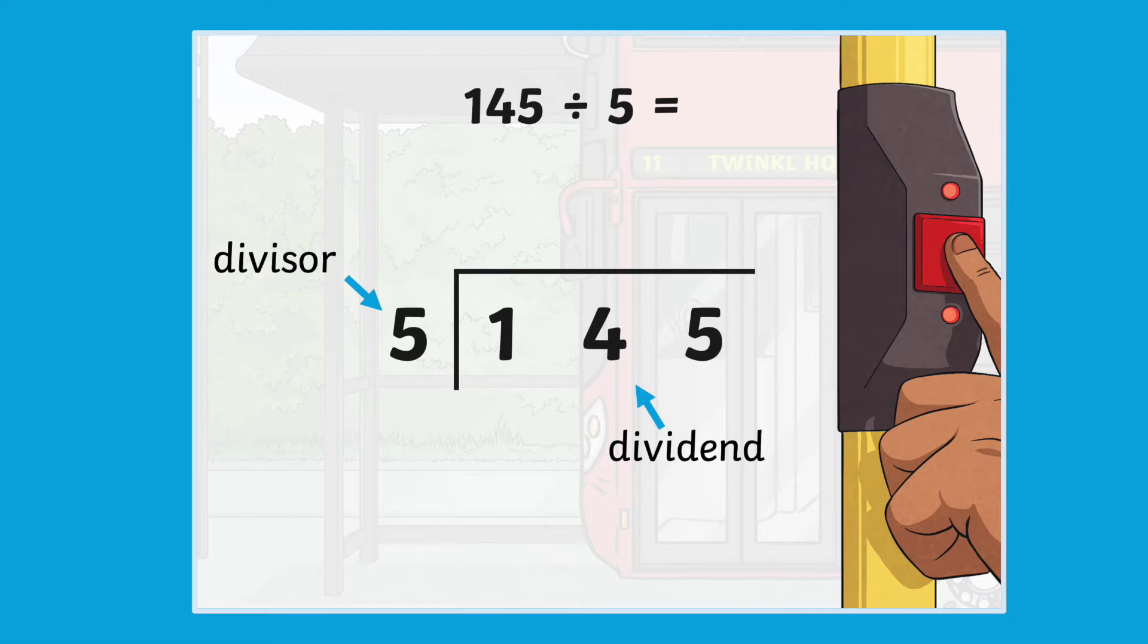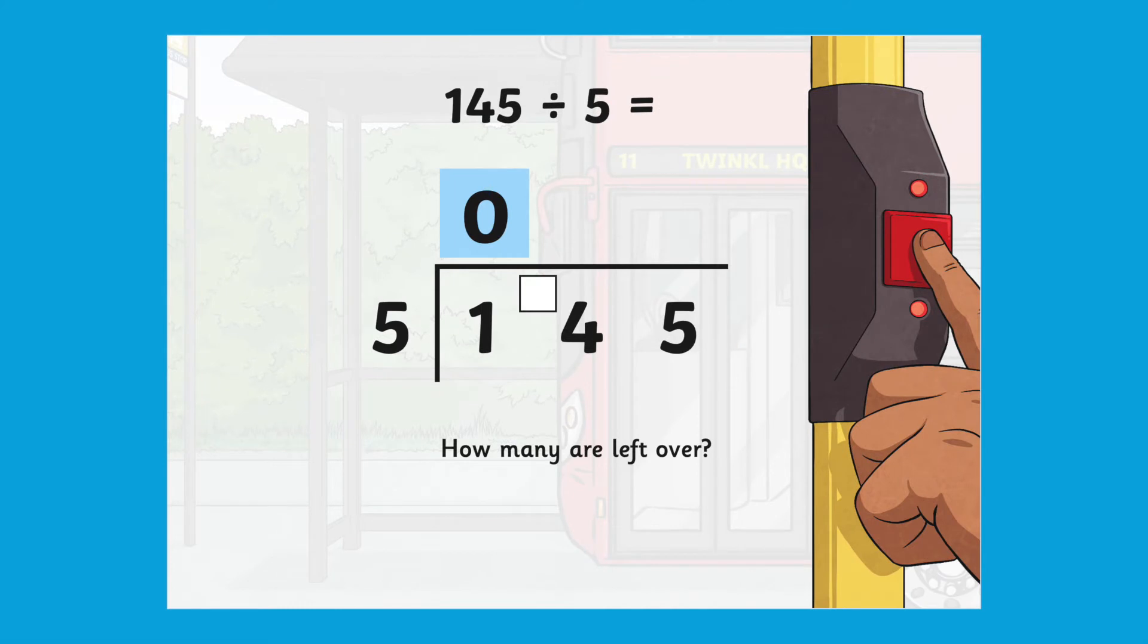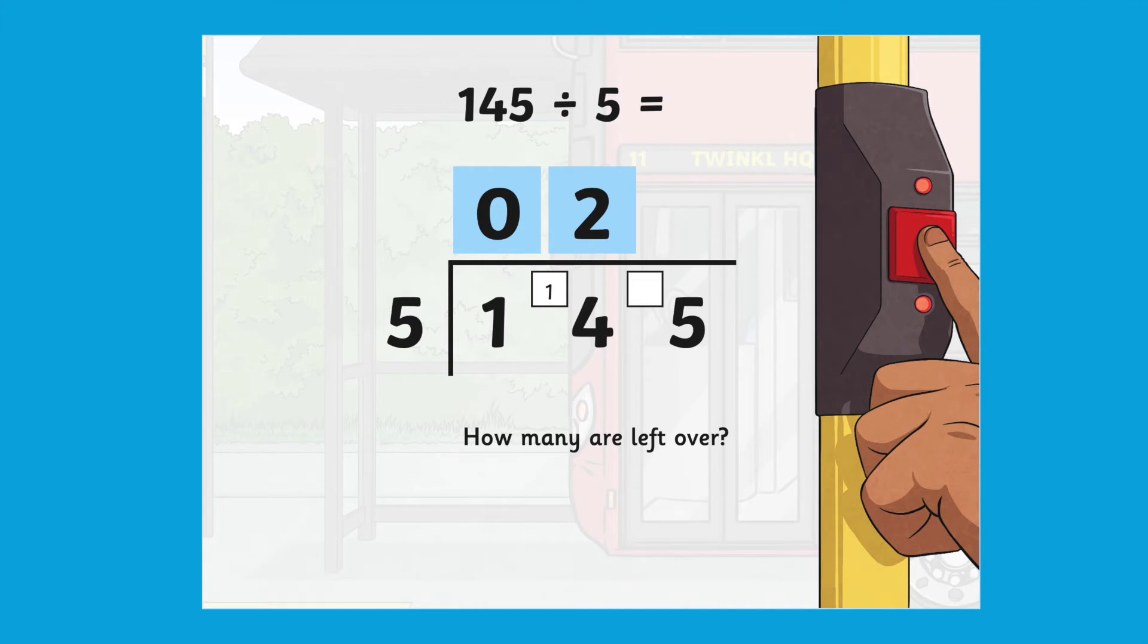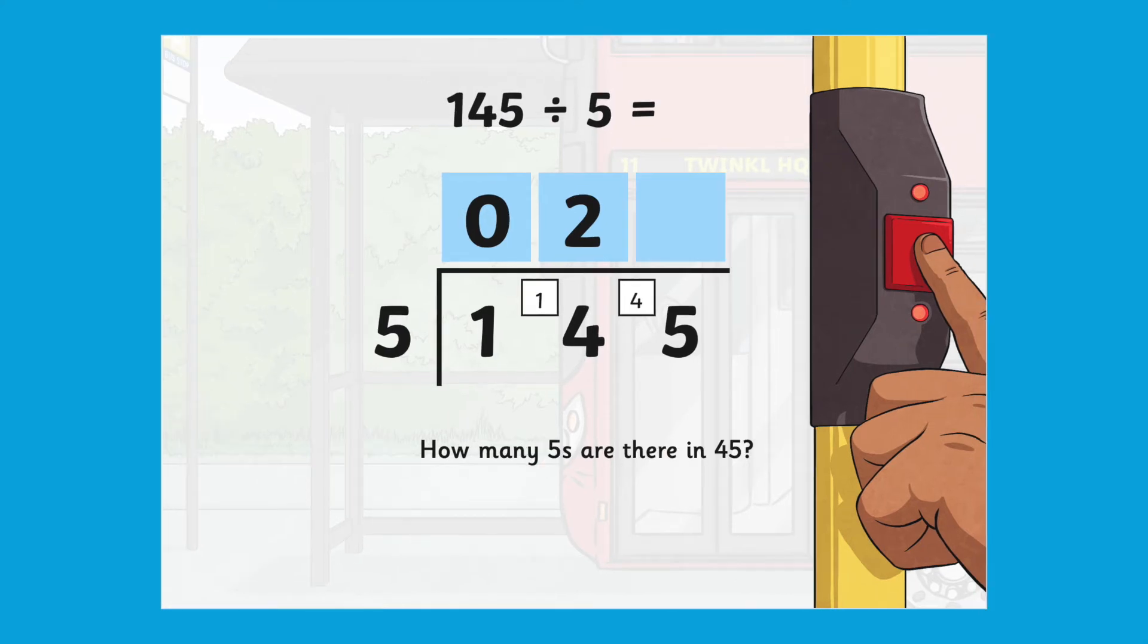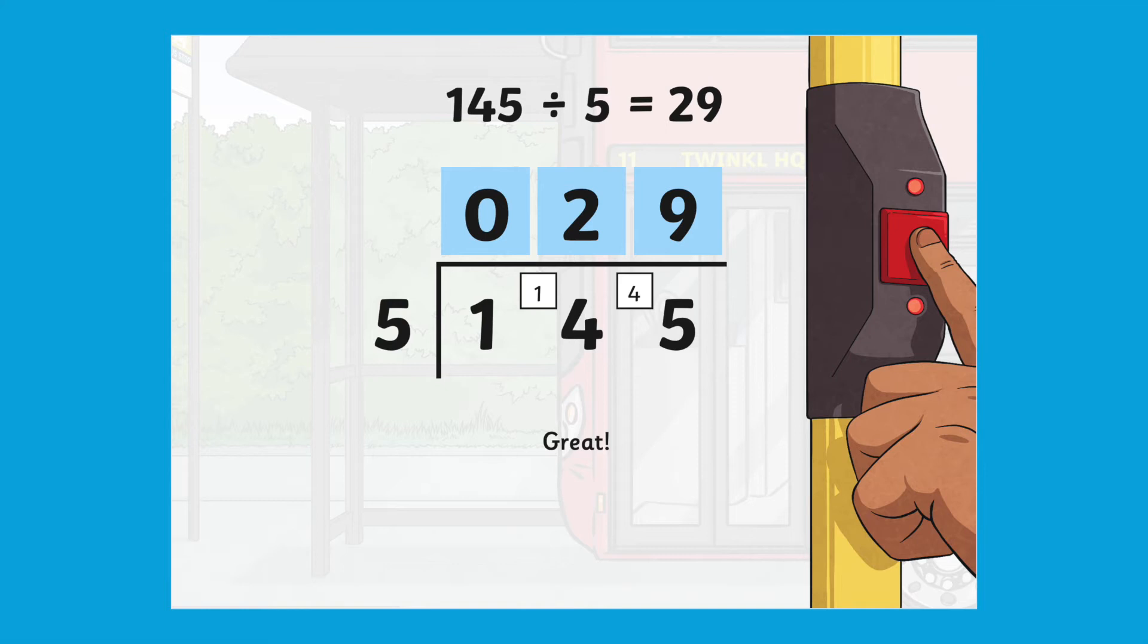As with most formal written methods within mathematics, one place value digit is tackled at a time. So we first look at how many fives are in the hundreds column, the tens, and then the ones, starting from the left-hand side. When there is something left over, it gets carried on to the next place value digit on the right, and some of that dividend may be left at the end as a remainder.